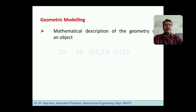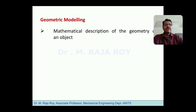Similarly, for a circle, ellipse, and parabola, equations will be there. By keeping all these equations, we write programs and using those programs we generate the objects or entities on the screen. By using those entities, we generate the model. That is the process of generating a geometric model. So geometry is nothing but the mathematical description of the object.